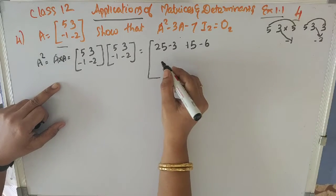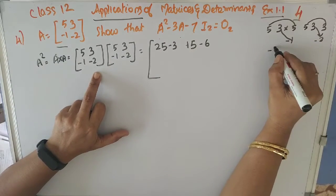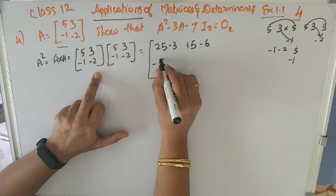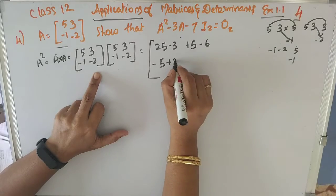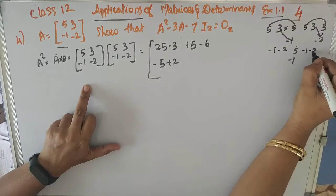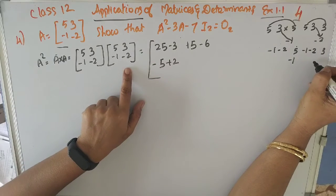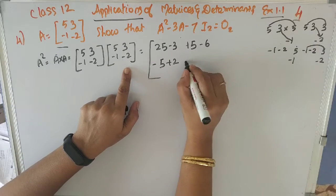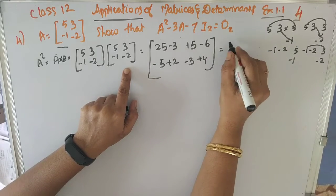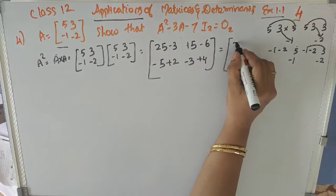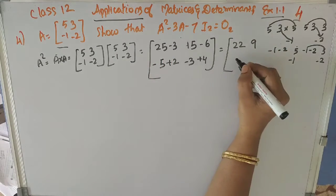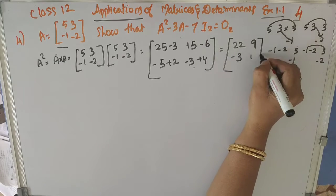Now row 2 into column 1: row 2 is minus 1, minus 2, and column 1 is 5, minus 1. So minus 1 into 5 is minus 5, plus minus 2 into minus 1 is plus 2. Row 2 into column 2: that is minus 1, minus 2 with column 2 being 3, minus 2. So minus 1 into 3 is minus 3, plus minus 2 into minus 2 is plus 4.